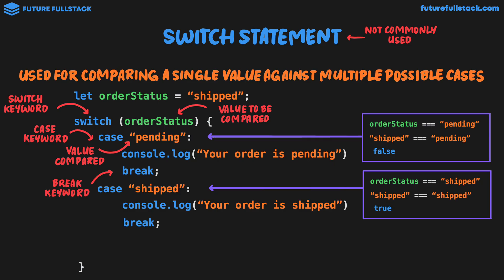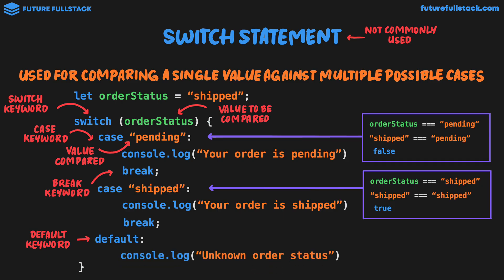We can then continue on with as many cases as we like. Very similar to a catch-all else statement, a switch statement has the default keyword — it outputs a catch all. That is, if none of our conditions are met — pending or shipped — we can output some code like unknown order status. An important note: for default we don't need to use the break keyword.